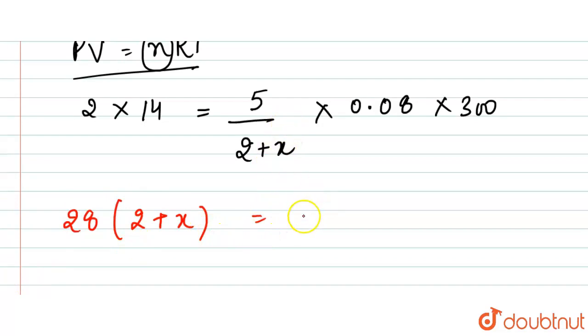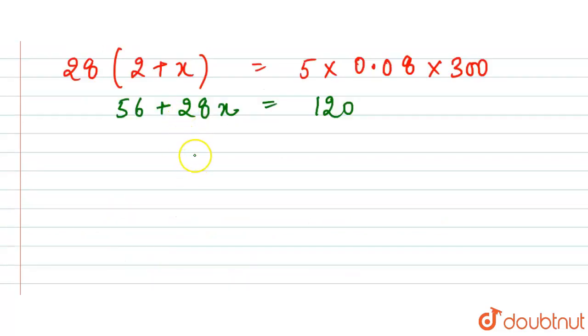This term equals 120. Here we have 56 + 28x = 120. From here, 28x = 64.